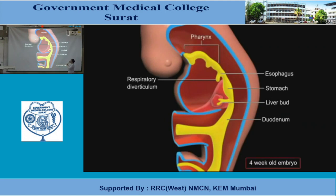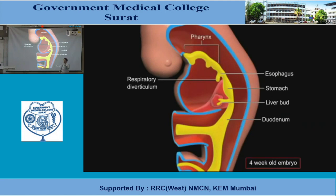So, you can see in the foregut, what are the derivatives? Pharynx, esophagus, stomach, liver bud, and part of the duodenum. And from the esophagus, a diverticulum arises ventrally. This is the ventral aspect of the embryo. And the lung bud comes from the ventral aspect of the esophagus.